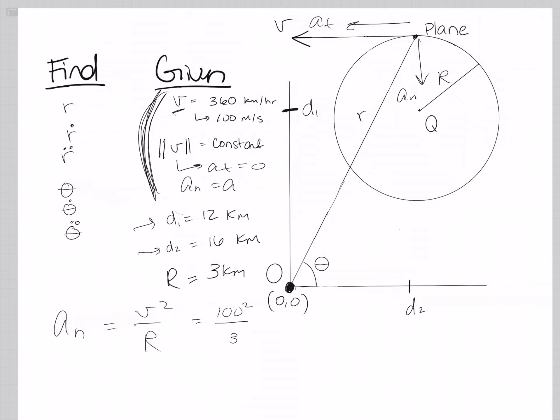And that is going to be 100 squared over 3. I went ahead and converted here. And then the value ends up being 3.33 meters per second squared, which is going to be really helpful to us later when we're looking at acceleration.